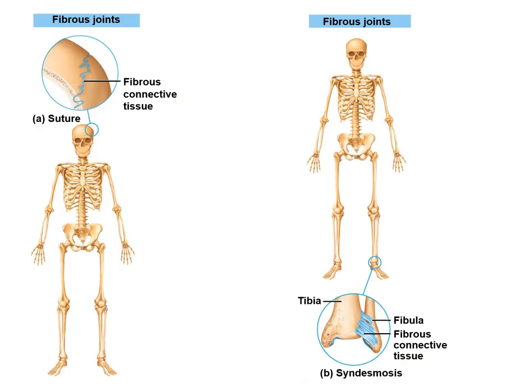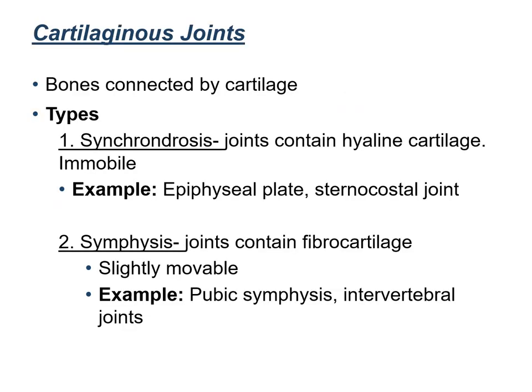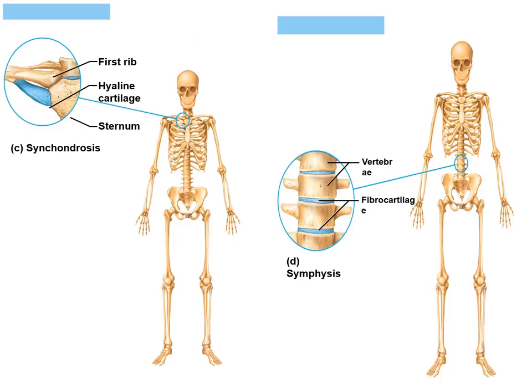This figure depicts fibrous joints. Cartilaginous joints have two subtypes: synchondrosis, which contains hyaline cartilage (example: the sternocostal joint), and symphysis, which contains fibrocartilage (example: pubic symphysis). The figures show synchondrosis and symphysis.